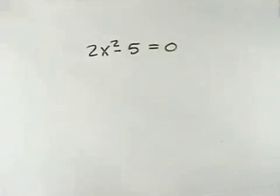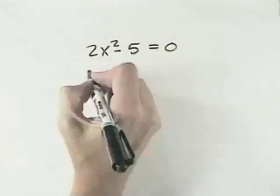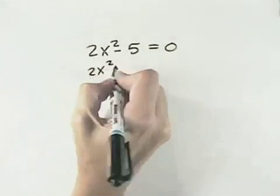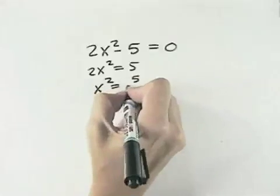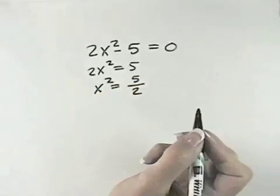So what we're going to do first is get the squared quantity on one side of our equation and everything else on the other, and then take the square root of both sides. So here we have 2x squared minus 5 equals 0. First we can add the 5 to both sides and divide by 2, so we know x squared equals 5 halves.